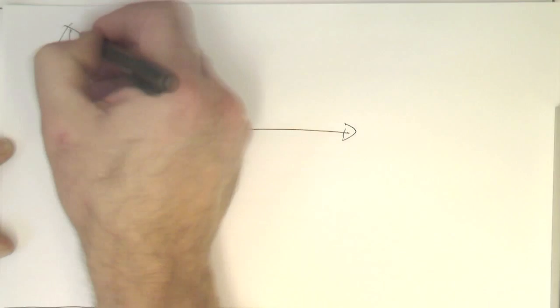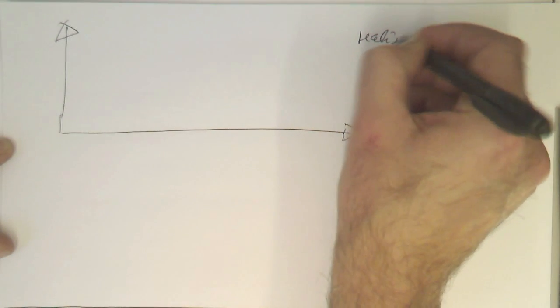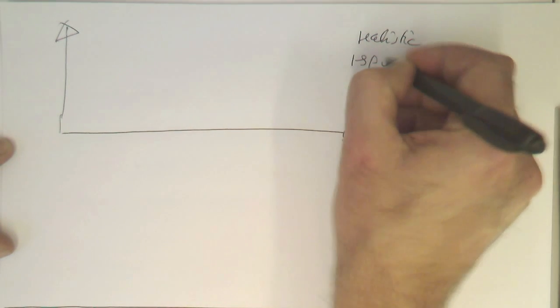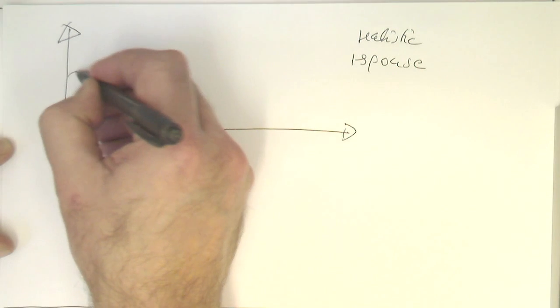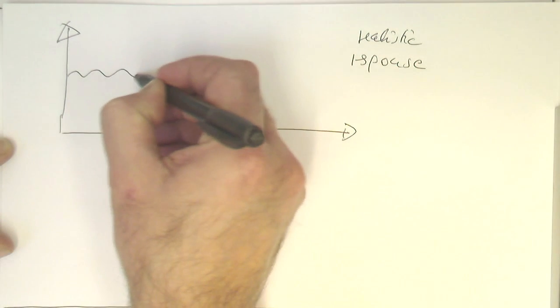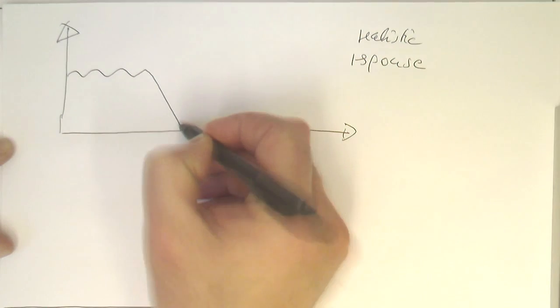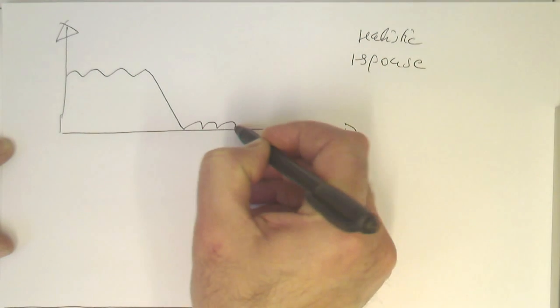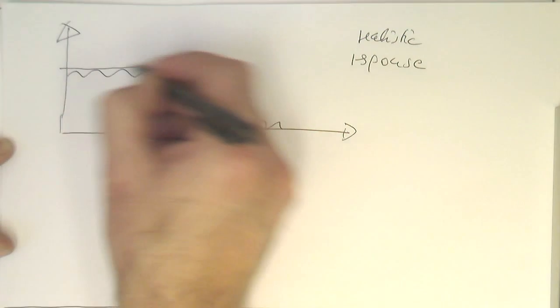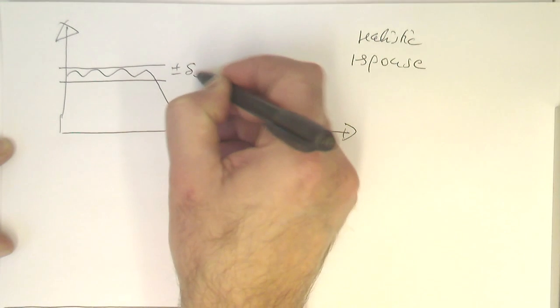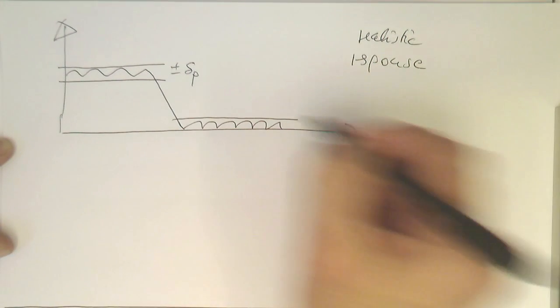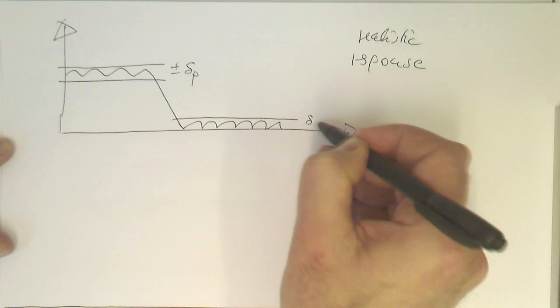So how do we define our realistic response? The realistic response, as we said, has ripples in the pass band, then a certain transition width, and then ripples in the stop band. What we define here is our plus-minus delta P — what we allow as pass band ripples — and then we define delta S for the stop band ripples.